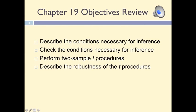In this presentation, we discussed how to make inferences about two population means using T procedures for independent samples. We showed how to estimate a confidence interval for the mean difference between two populations, and how to test whether this difference is statistically significant. We also discussed the conditions that we have to meet to conduct these procedures, and the robustness of T procedures to the violation of these assumptions.